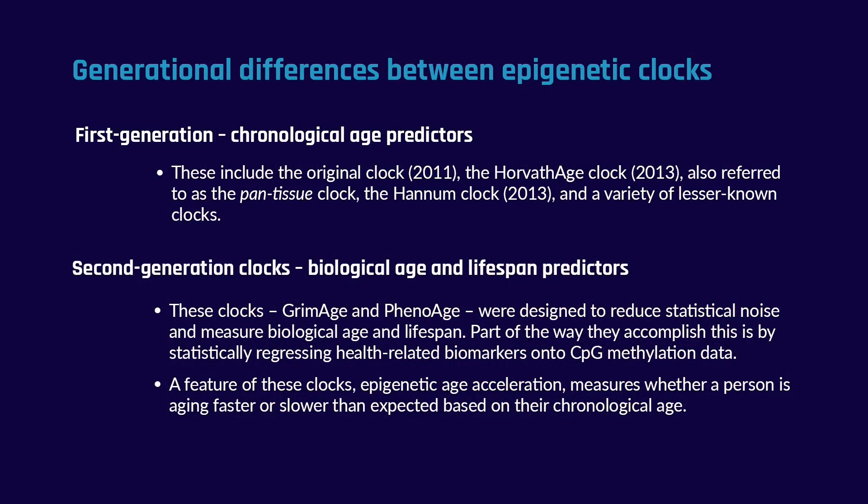No one really knows yet what the true causes are. Since your research really does focus on epigenetic alterations, can you explain what epigenetic aging clocks are, generally speaking? And maybe we can get into some of the differences between first-generation epigenetic aging clocks like the Horvath clock, and then second-generation ones like Levine, or PhenoAge as it's also called, and GrimAge.